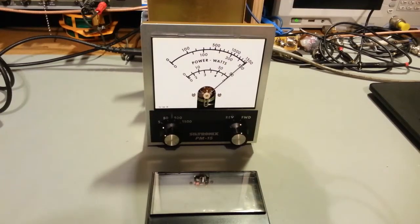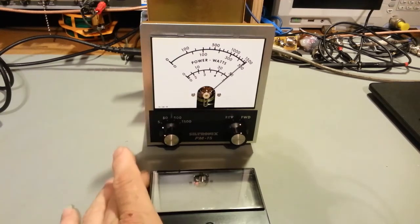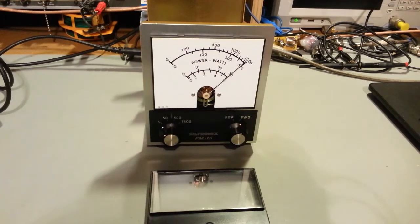Okay, today on the bench we have a Siltronics model PM15. This is a wattmeter. Now you can see the face is off of it. It was sent in and the customer said the needle was sticking and wasn't working right. Apparently he had just gotten this.